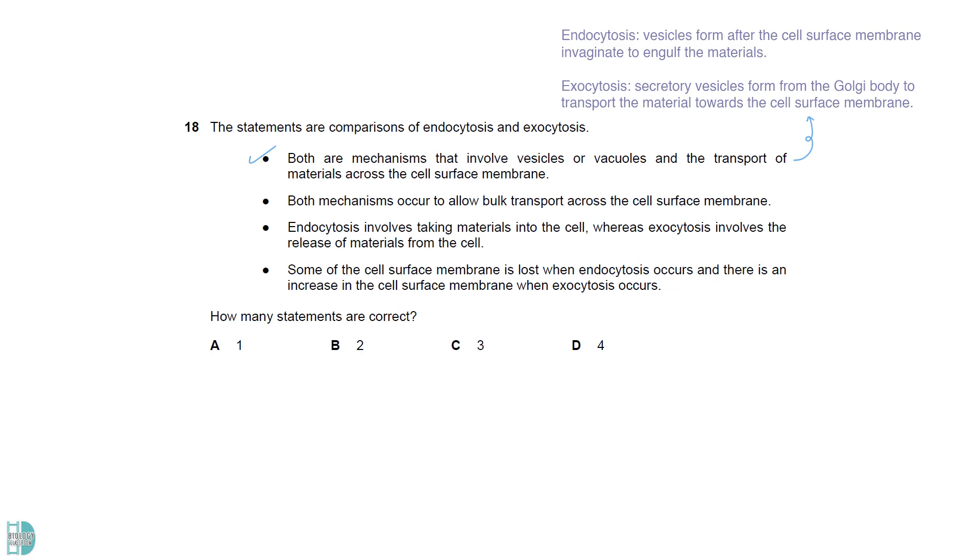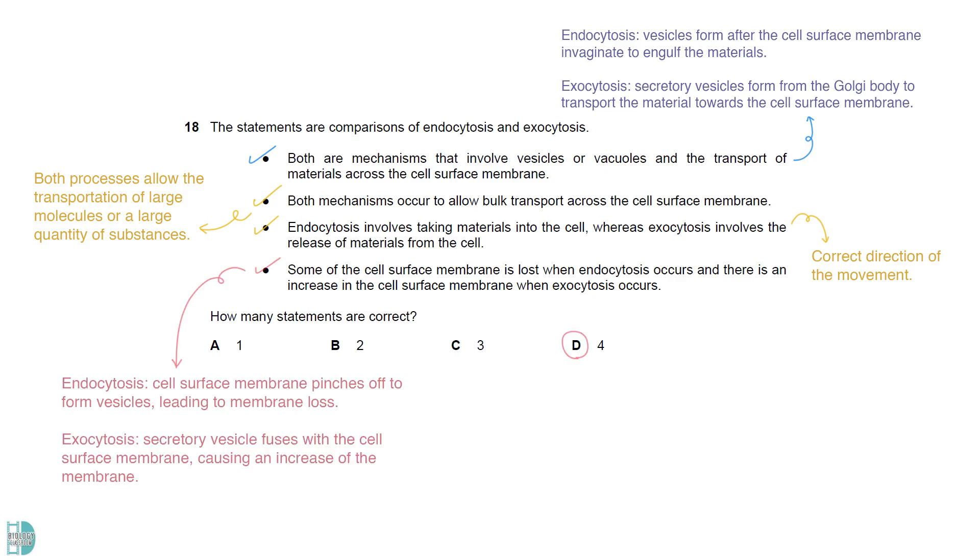Endocytic vesicles form after the cell surface membrane invaginates to engulf the materials. In exocytosis, secretory vesicles form from the Golgi body to transport the material towards the cell surface membrane. So, the first statement is correct. Both processes allow the transportation of large molecules or a large quantity of substances. Statement 2 is correct. Statement 3 correctly states the direction of the movement. During endocytosis, the cell surface membrane pinches off to form a vesicle, leading to membrane loss. In exocytosis, secretory vesicle fuses with the cell surface membrane, causing an increase of the membrane.